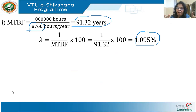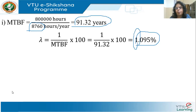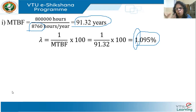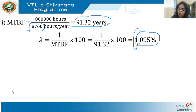If instead the disk is used continuously throughout the year — 8,760 hours (365 days × 24 hours) — the MTBF becomes 91.32 years and lambda is 1.095%. That means if you use 100 disks continuously, there is a probability of about one disk failing in one year. It may or may not fail — after all, it is only a probability.